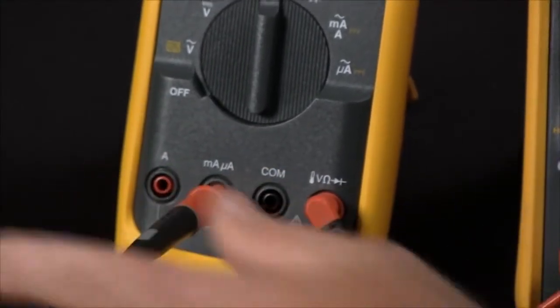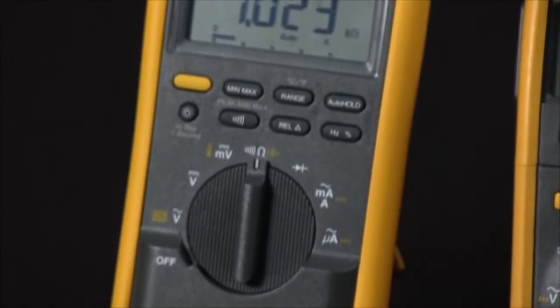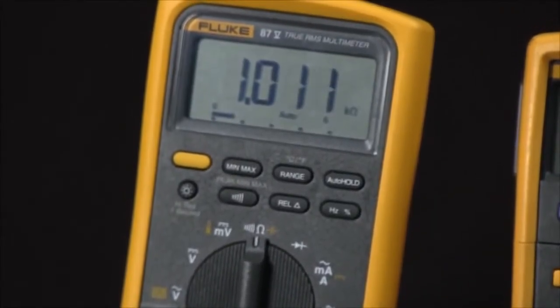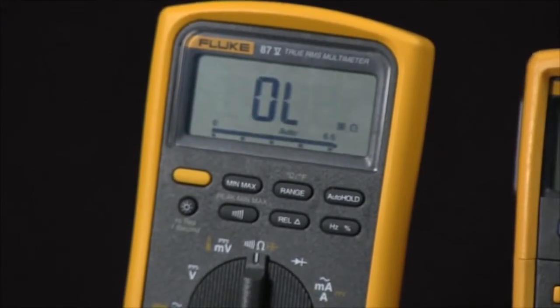In the milliamp jack, what we have is we have a slow blow fuse so there you'll typically see about 1000 ohms on the reading.